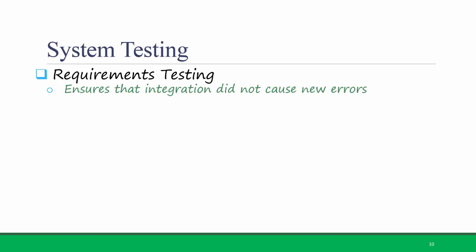The next level is system testing. Again, you won't have to know the categories on this screen for the exam, but you should know at a high level what system testing is and what is included in it. One type of system testing is requirements testing, which ensures that integration did not cause new errors.